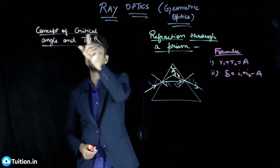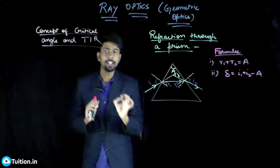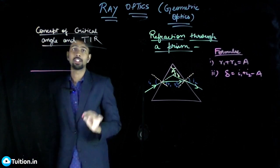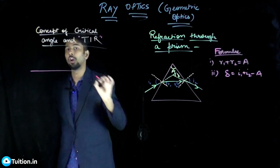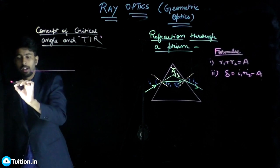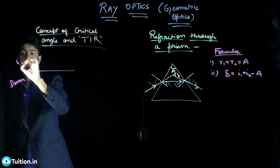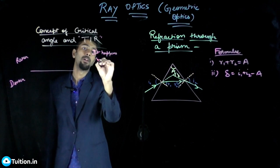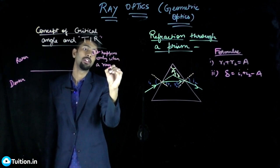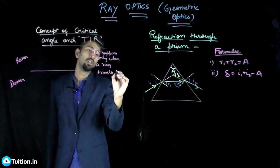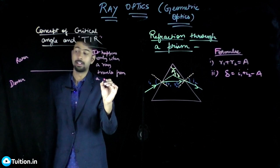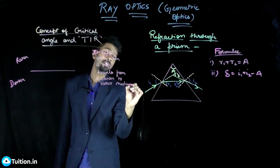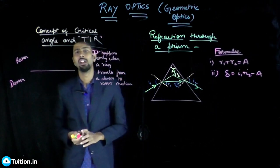Let's discuss the concept of critical angle and total internal reflection — a very simple concept. This phenomena of total internal reflection happens only when a ray travels from a denser medium to a rarer medium. If your ray is traveling from rarer to denser medium, total internal reflection will never happen.